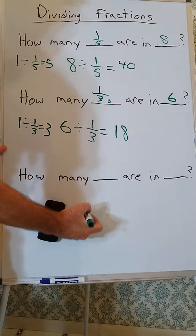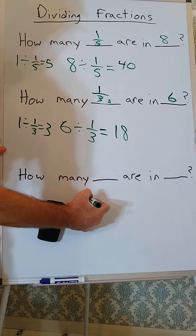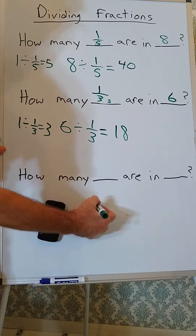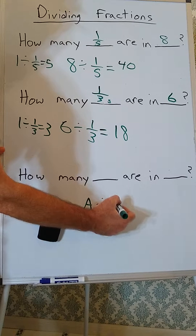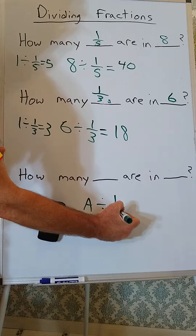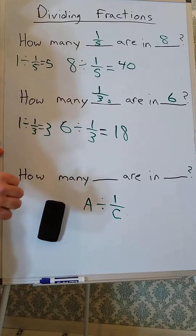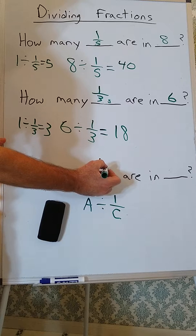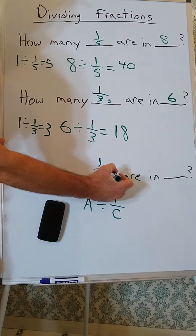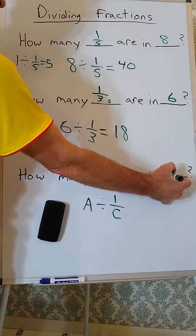So, let's say I'm doing a, and we'll say a is a whole number, divided by 1 over c. So, what's that asking? How many 1 over c's are there in a?